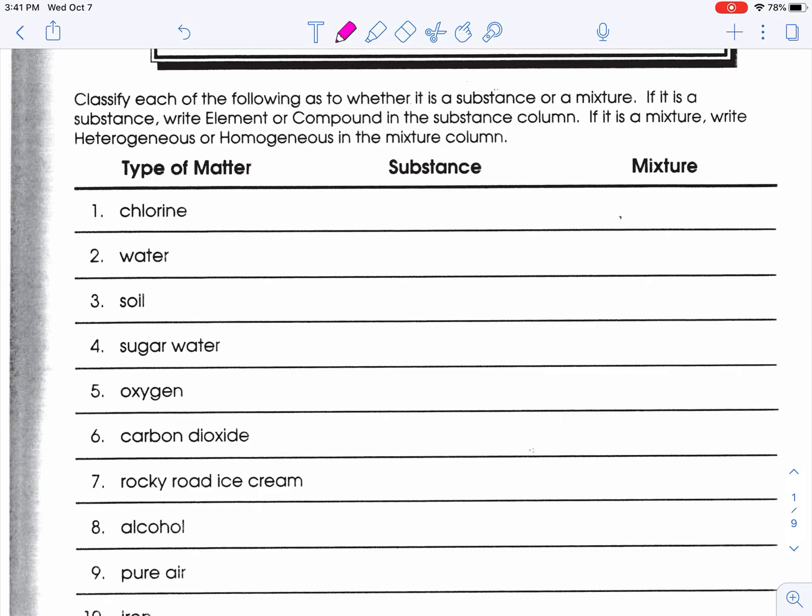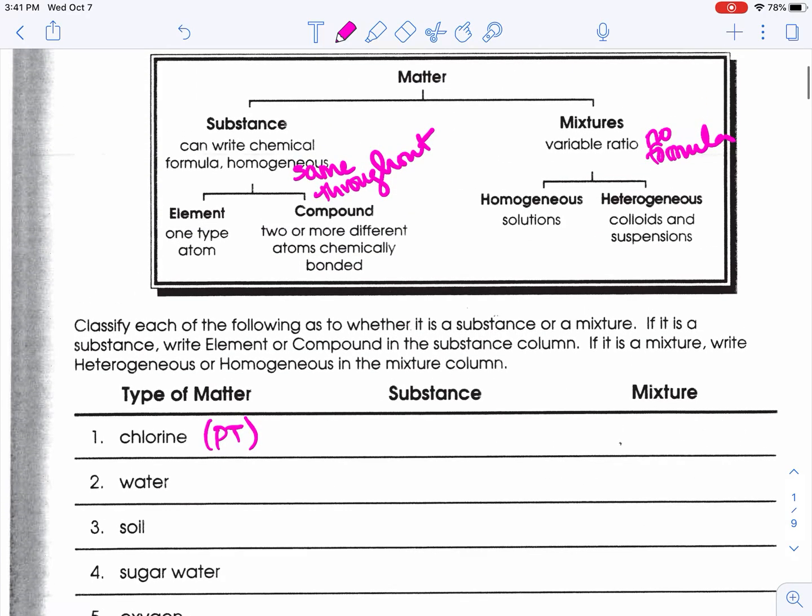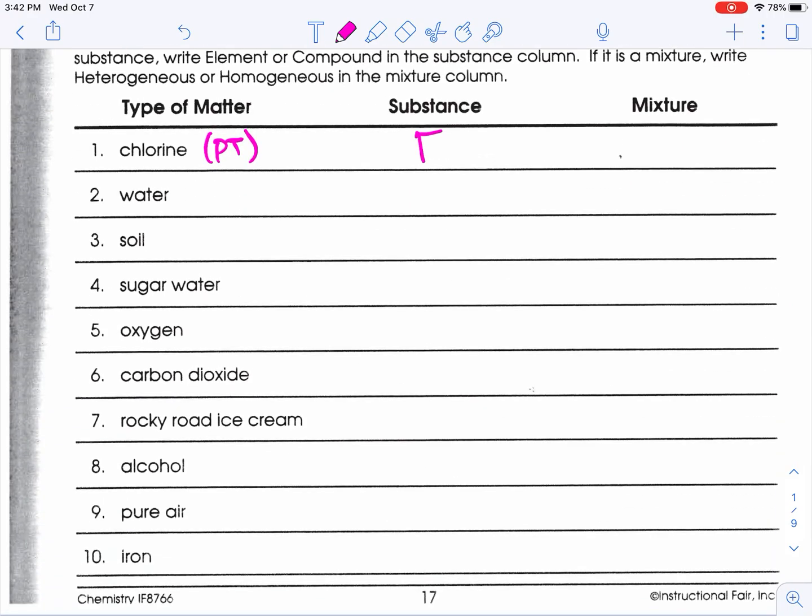The first thing is chlorine. Chlorine is an element on the periodic table, so it's an element. Elements are pure substances and we can write their formula—chlorine's formula is Cl (Cl2). Water has a formula, H2O, so it's a substance, but it has two different elements, so we call that a compound.